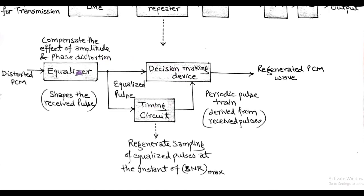Equalizer is used to reshape the distorted PCM by compensating the effect of amplitude and phase distortion. At the output of equalizer, we get equalized pulses that are applied individually to both timing circuit and decision making device. The function of timing circuit is to regenerate sampling process of equalized pulses at the instant of maximum signal to noise ratio. This timing circuit produces a periodic sampled equalized pulse corresponding to the input PCM signal.